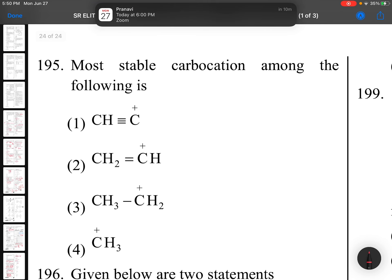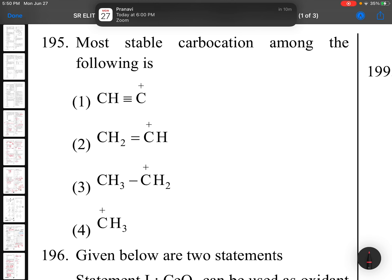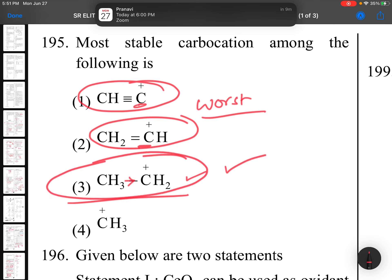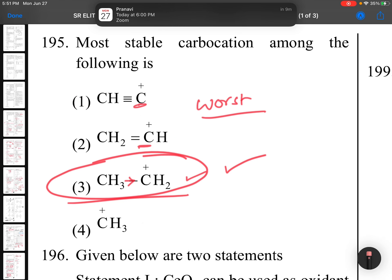Question 195: Most stable carbocation among the following. These two are worst and worst. Because triple bond carbon and double bond carbon cannot be comfortable with the positive charge. This is okay because this is inductive. So this is the best answer, correct answer.